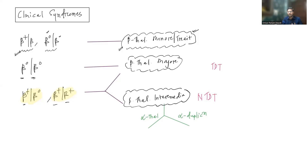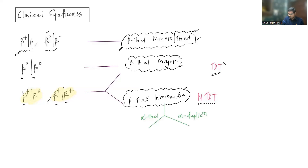We have three types: beta thalassemia minor or trait, major, and intermediate. Minor is completely asymptomatic. Major patients are dependent on blood transfusion — without it they will die; these are known as transfusion-dependent thalassemia. Beta thalassemia intermediate patients require transfusions only intermittently under stress; they are not dependent for survival, known as non-transfusion-dependent thalassemia. In current practice, we prefer the terms transfusion-dependent and non-transfusion-dependent thalassemia over major and intermediate.